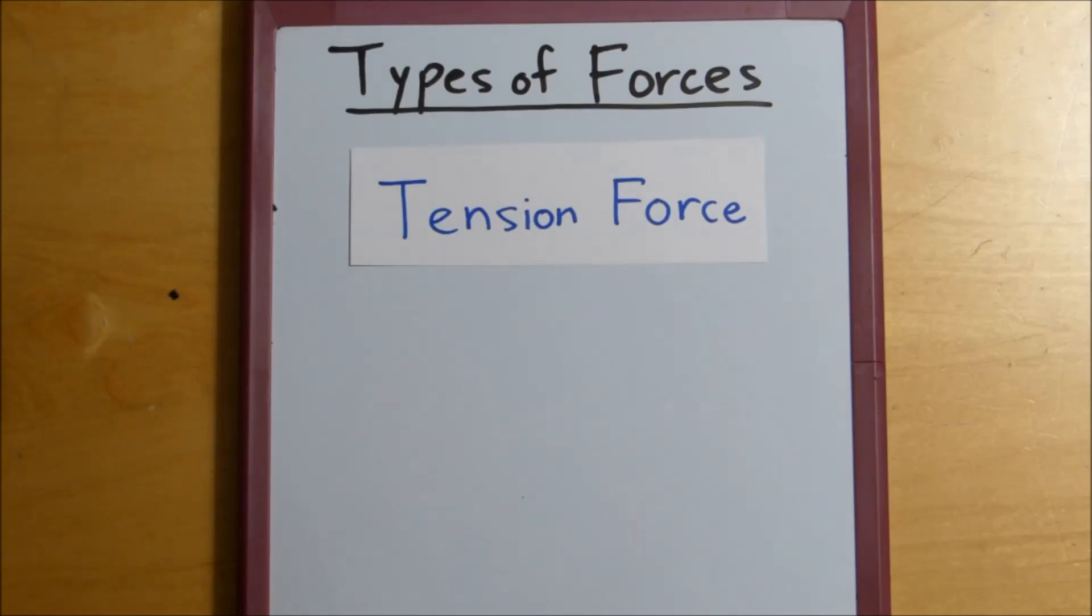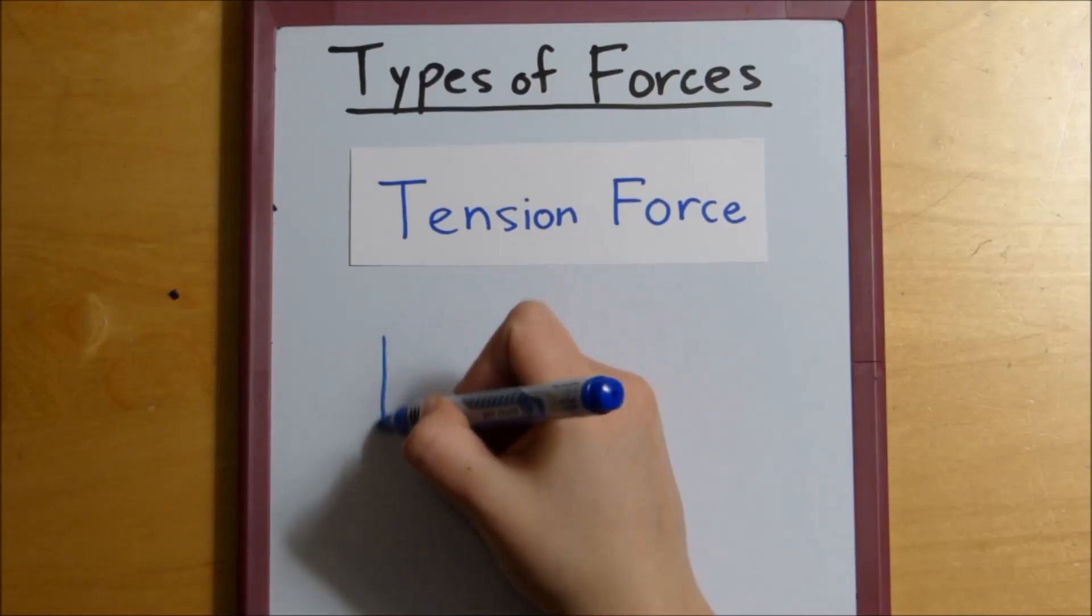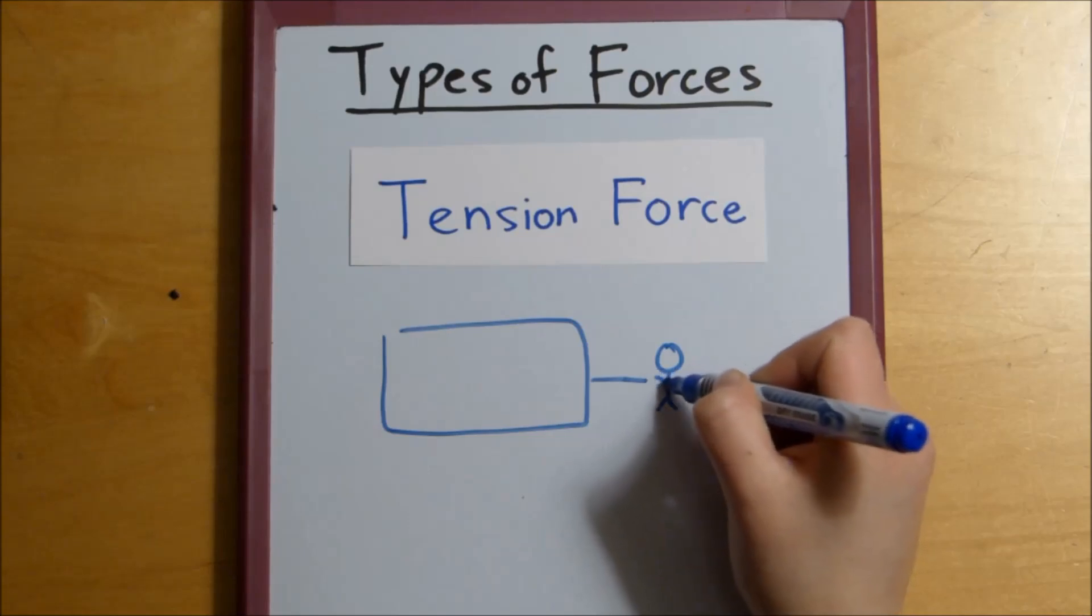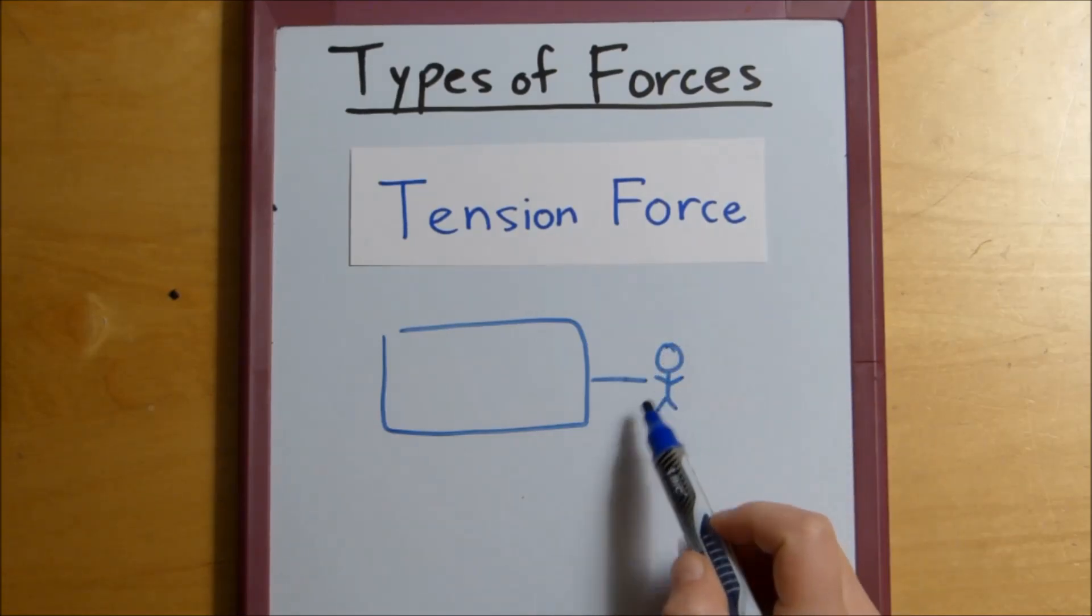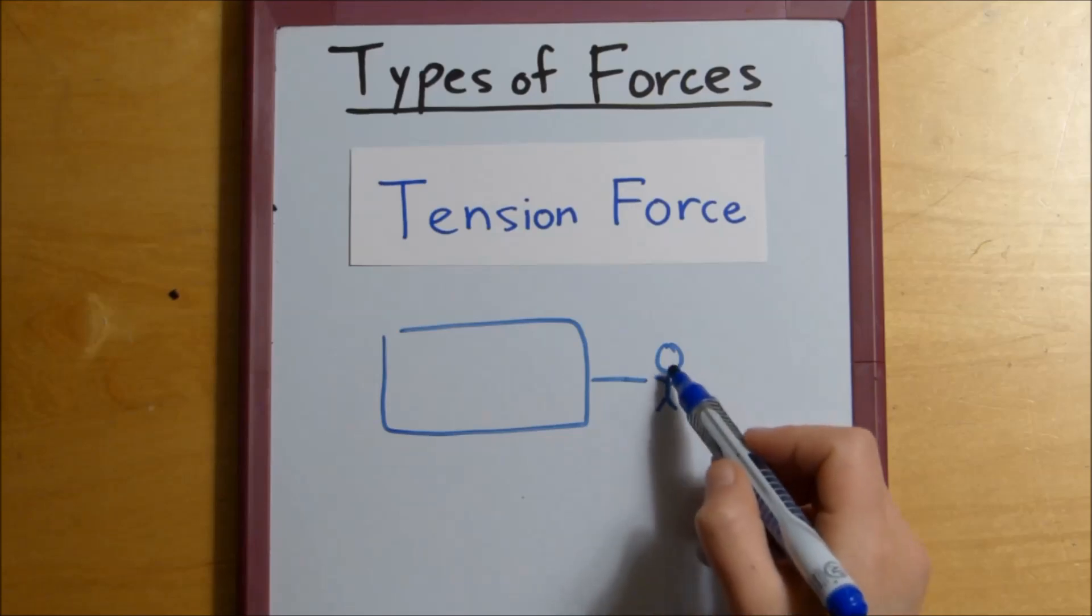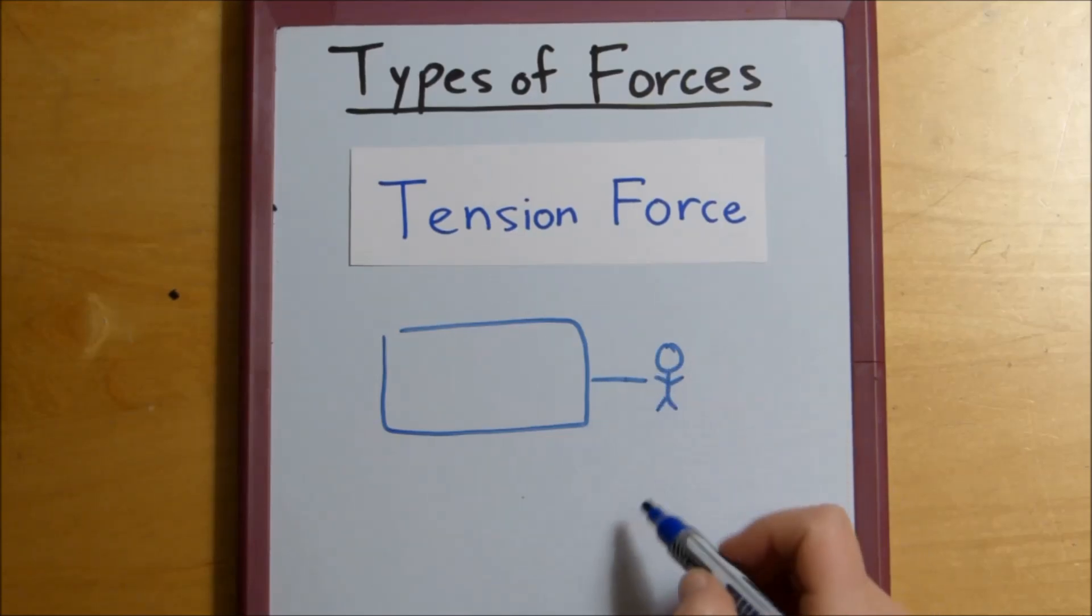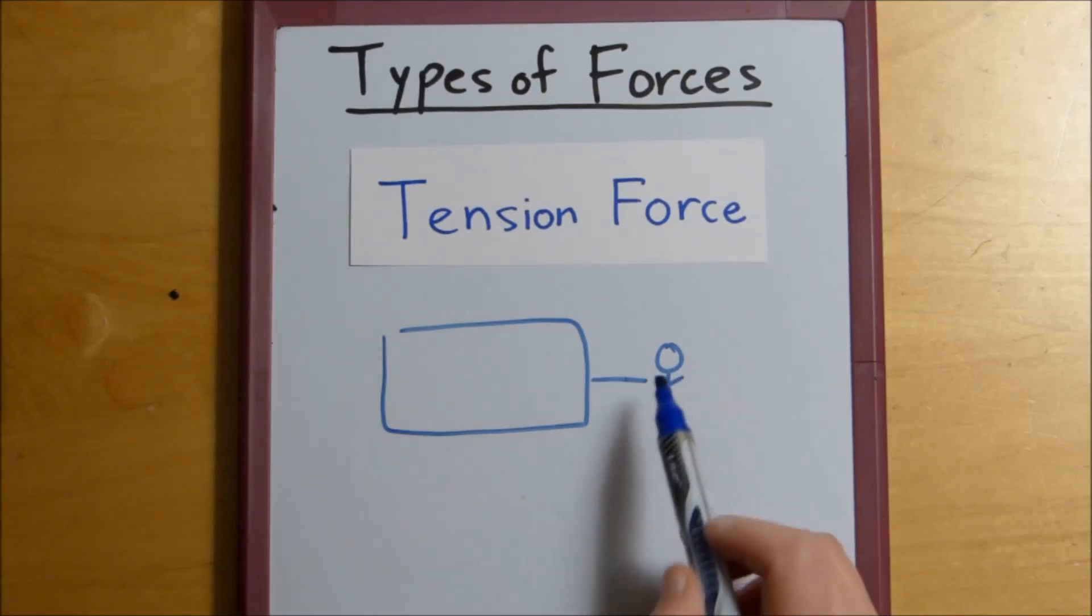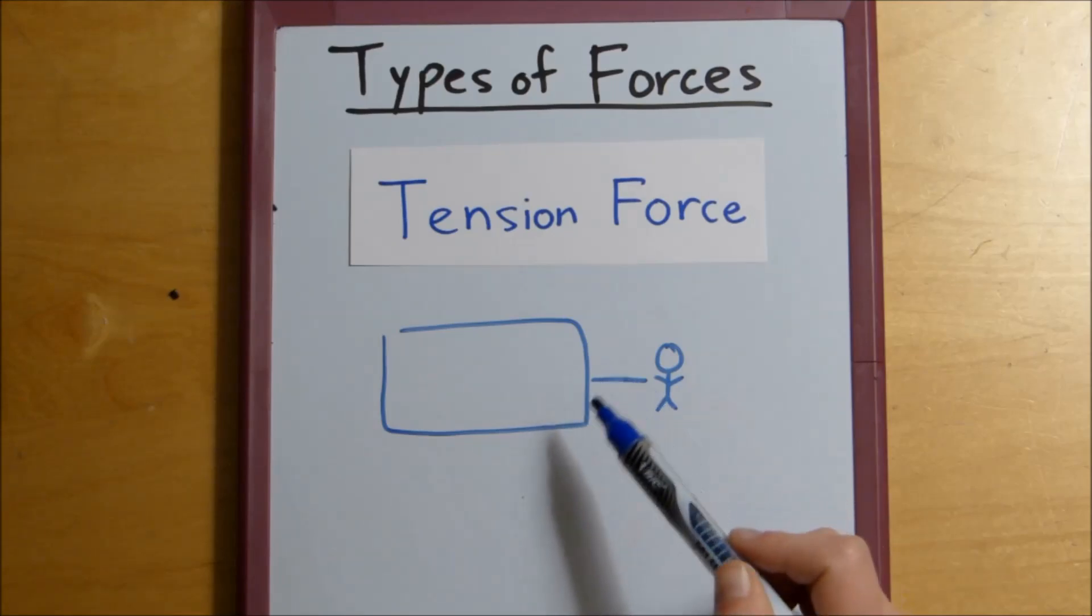So suppose, instead of pushing the box, we have pulling it on the other end. We would say that if we drew a free body diagram for Bob, we would say that the tension force with which Bob pulls on the rope is the same value as the tension force that the rope pulls on the box, right?